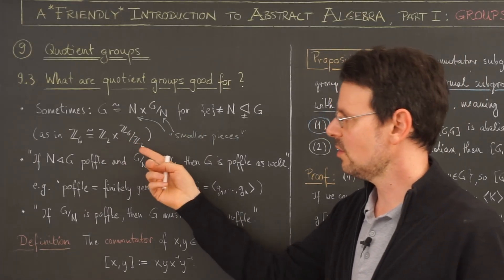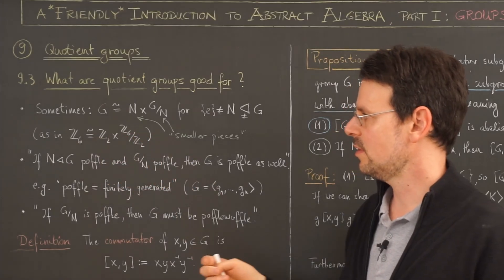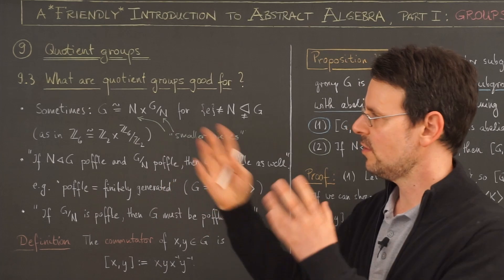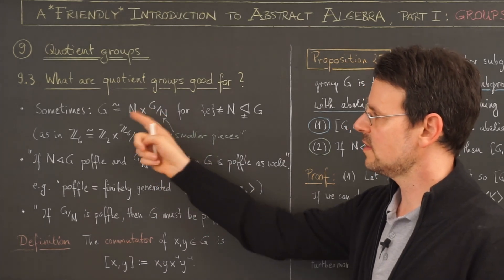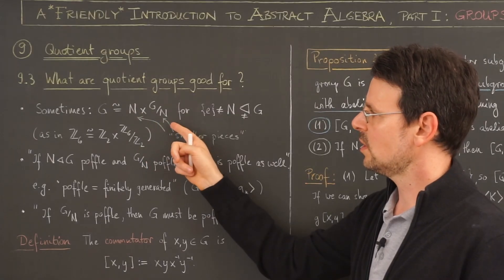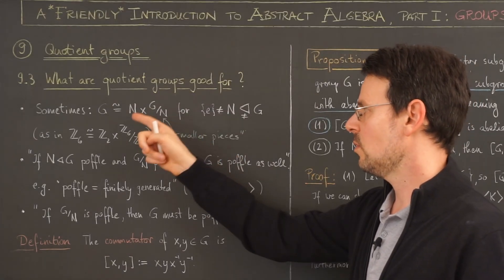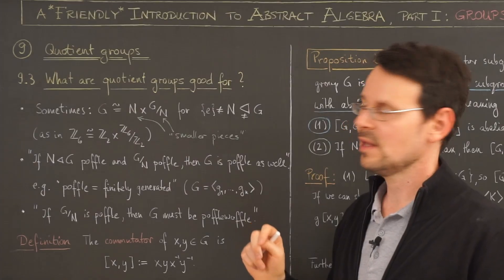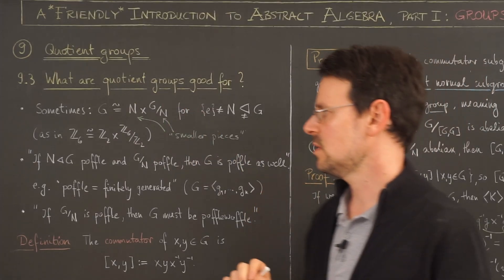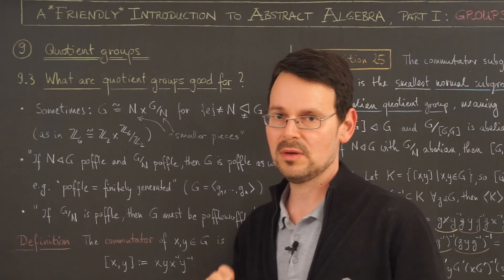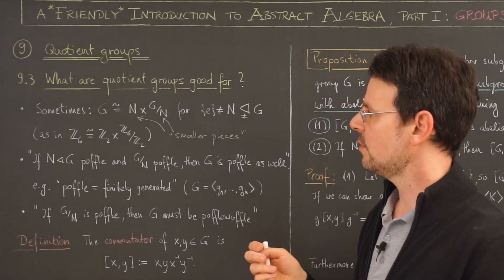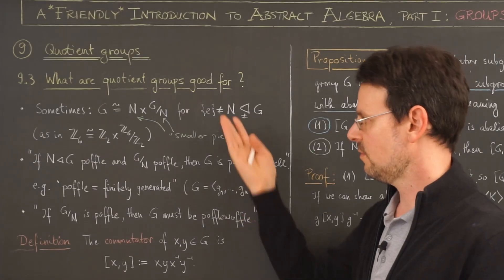Of course, in this example it's not very helpful because both sides are kind of trivial or small groups. But if you have a larger group and you know that it is the direct product of this normal subgroup and its quotient, then you have a better chance to understand the whole group by looking at these two smaller pieces. This is one argument why factor groups or quotient groups might be helpful for the understanding of groups.